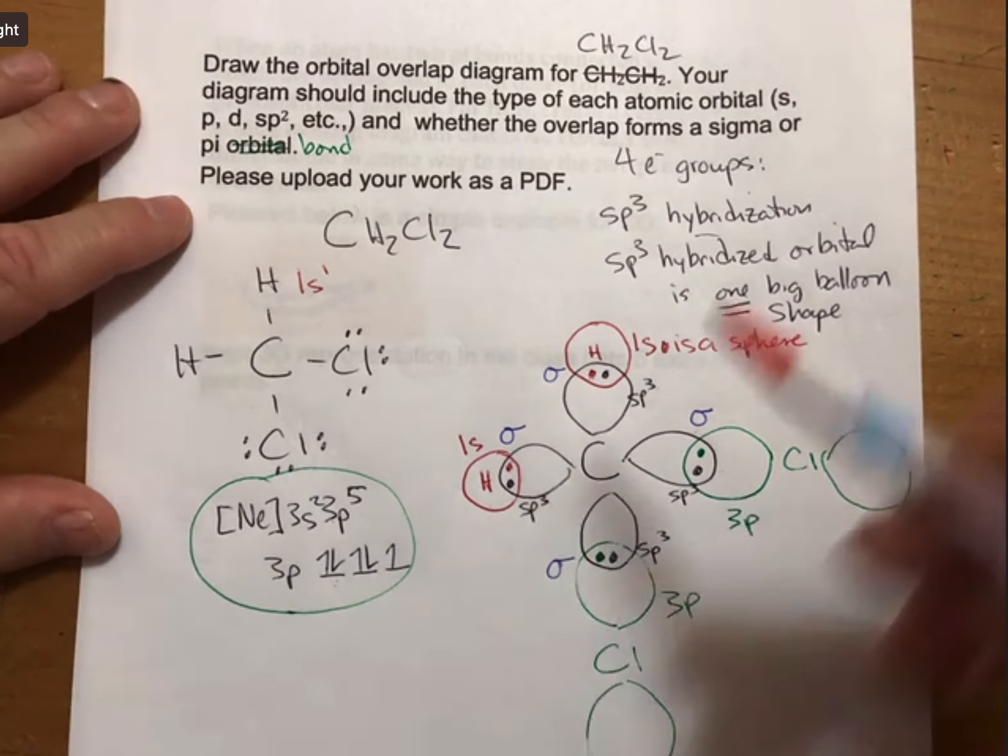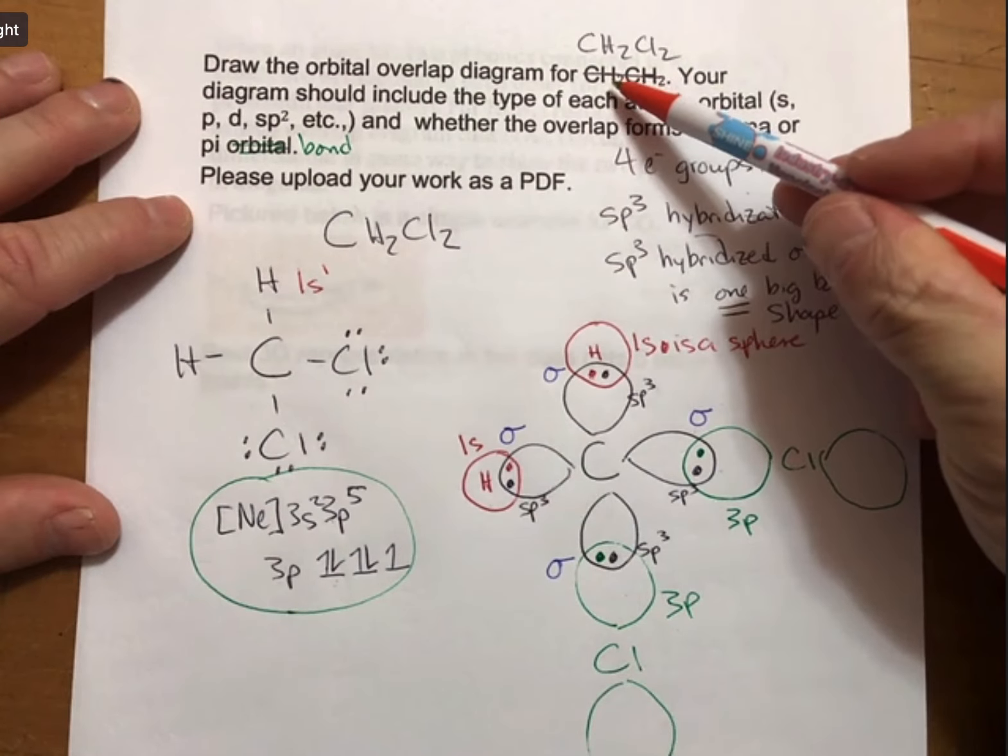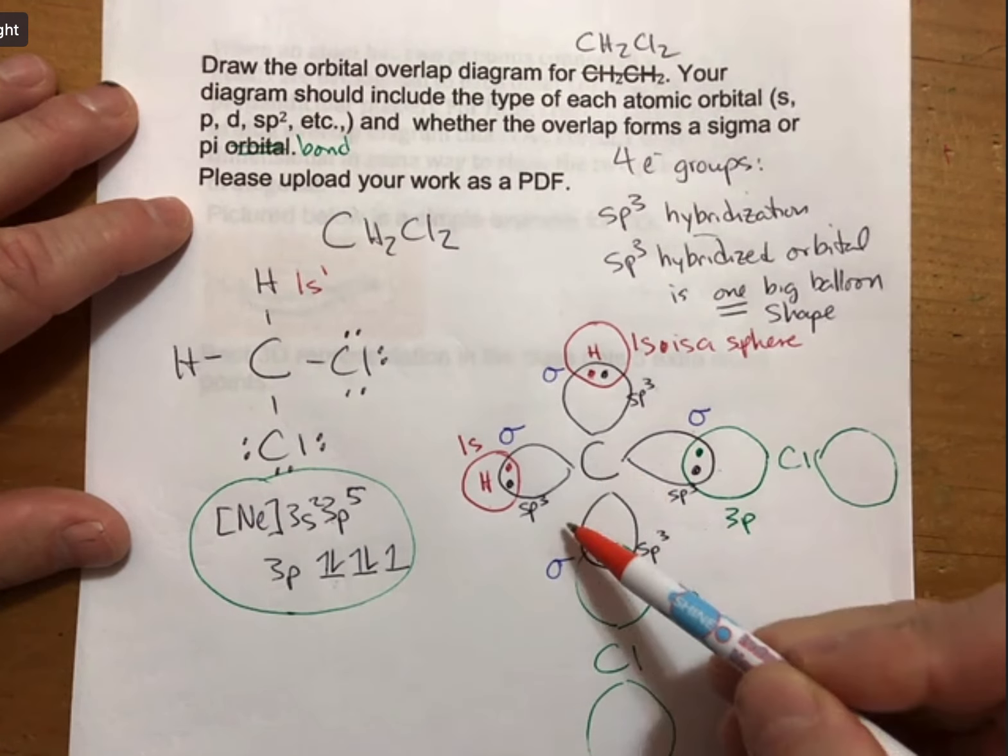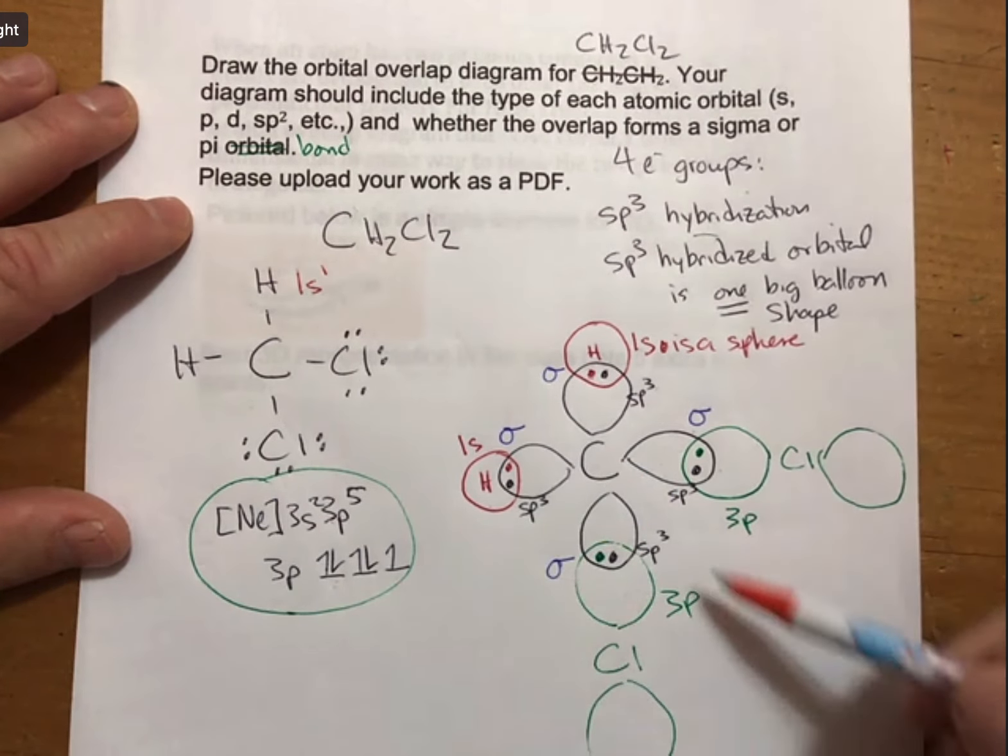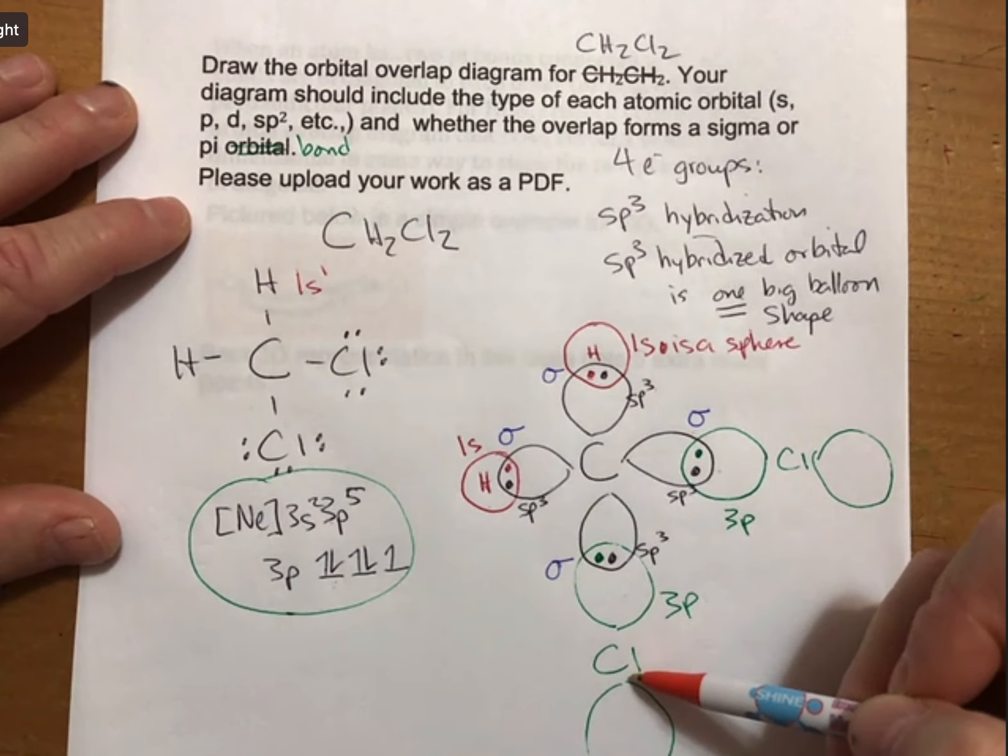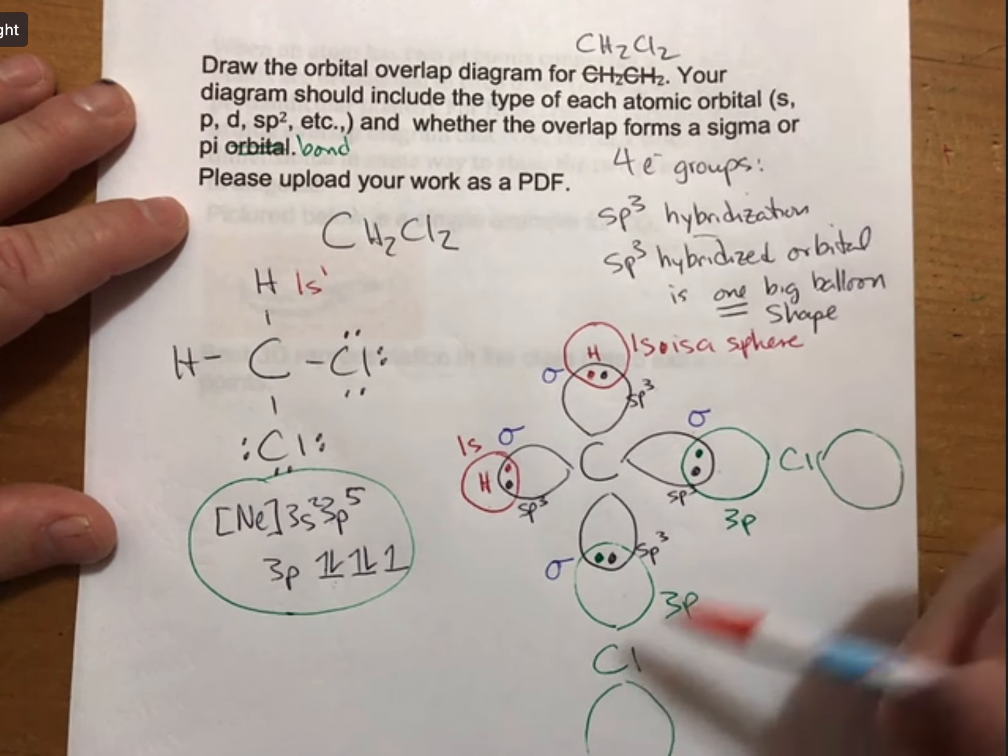In CH2CH2 there will be at least one pi bond. We demonstrated what pi bonds look like in the lecture outline. If there was a pi bond between the chlorine and the carbon, they would be on the sides here because pi bonds are not between the two nuclei.